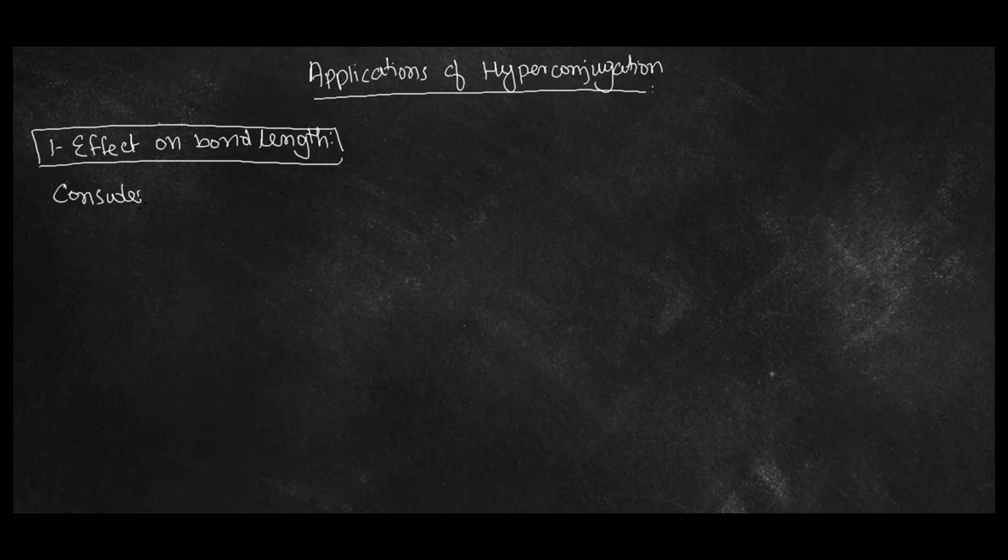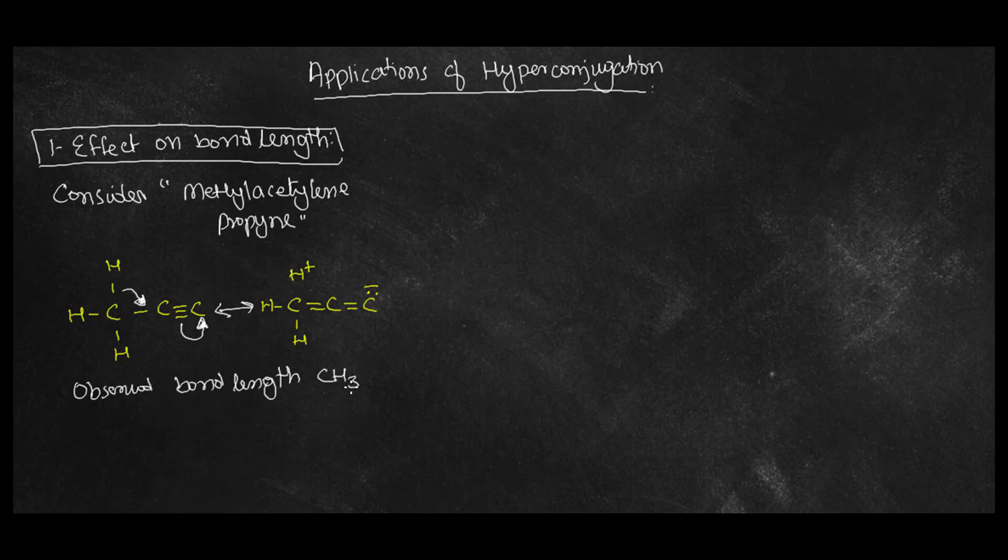So applications of hyperconjugation: there are certain applications of hyperconjugation. The first one is effect on bond length. Consider methylacetylene or propyne, this example that is written in the yellow color. How sigma bonds move towards the carbon atom and the bond that is present between carbon and carbon moves towards carbon, getting it negative charge.